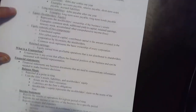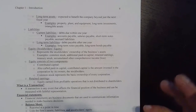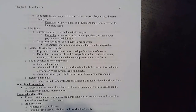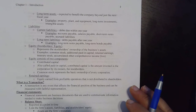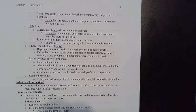Long-term assets are assets that have a life of more than one year and are going to provide future benefit. That is the actual definition of an asset — something you own that will provide future benefit. Examples are property, plant, and equipment — meaning land, buildings, equipment, and machinery — long-term investments, intangible assets, and other assets such as oil and gas or mining assets like a gold mine or iron ore mine.